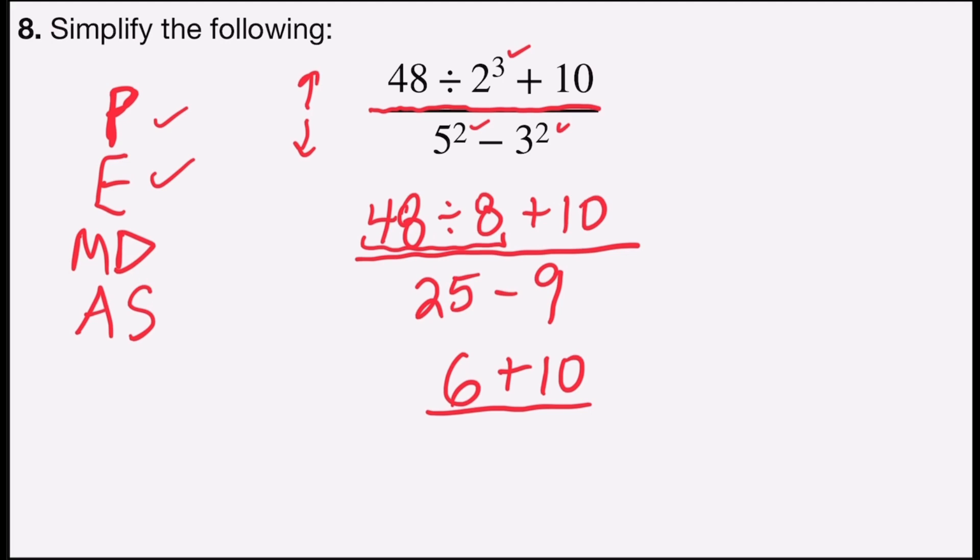My denominator has no multiplication and division, so that's 25 minus 9. Now all I have to do is add 6 plus 10 in the numerator, which is 16. 25 minus 9 in the denominator is also 16.